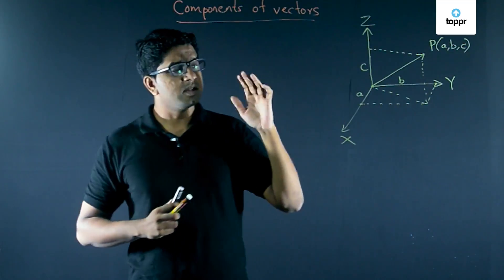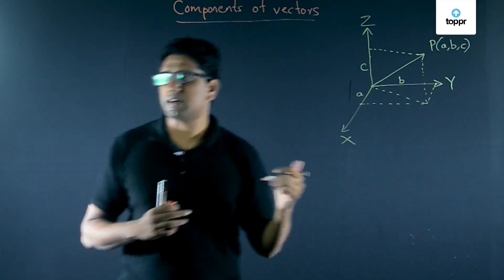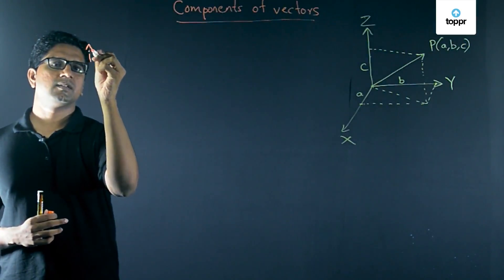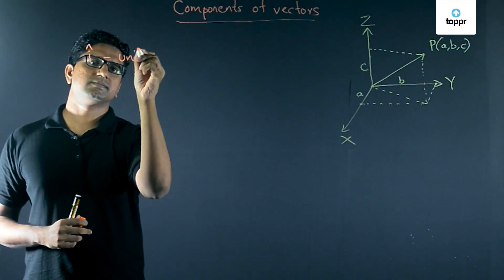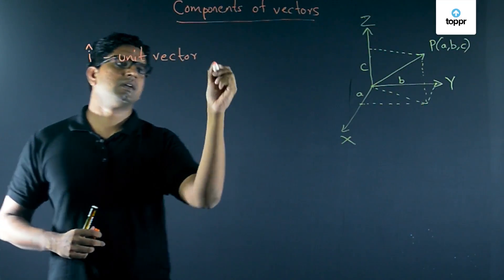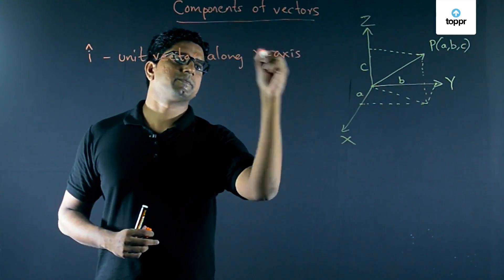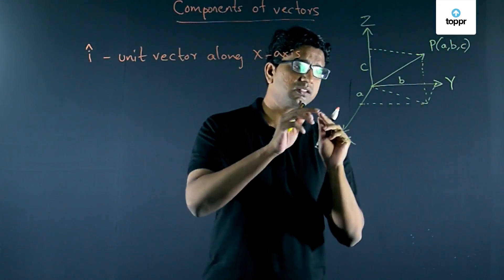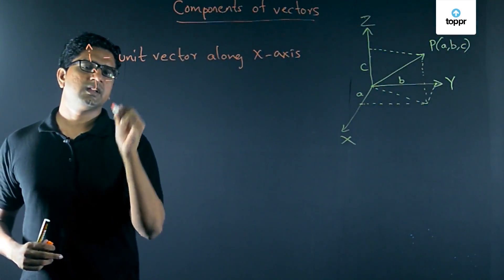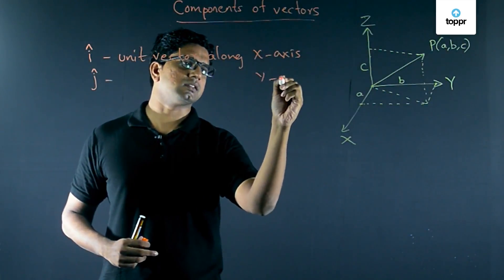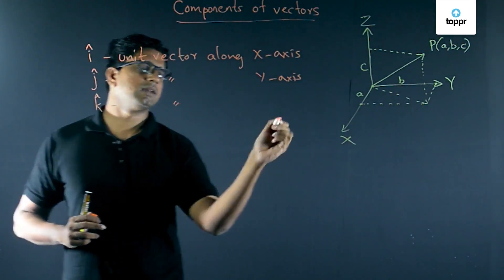To represent this point as a vector, there is a convention: the unit vector along the x-axis is denoted by i-hat (small i with a hat on top). Similarly, j-hat is the unit vector along the y-axis, and k-hat is the unit vector along the z-axis.